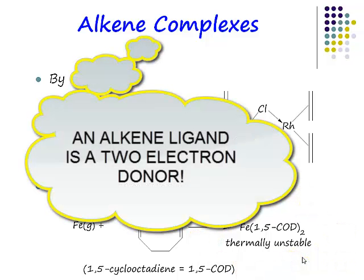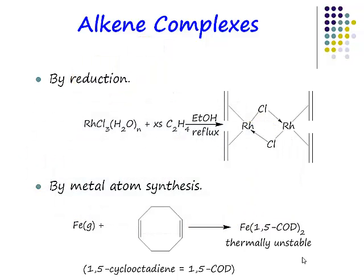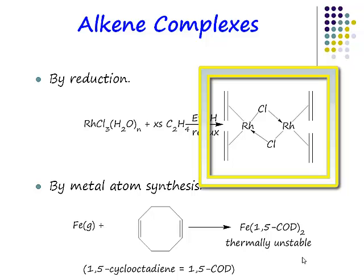An alkene ligand is a two-electron donor. There are two electrons in the π cloud of a double bond, and it is that orbital that is being donated. Now what about this structure here? This is a beautiful example — I hope some of you have your numbers ready, because this is a beautiful example of an electron counting problem.